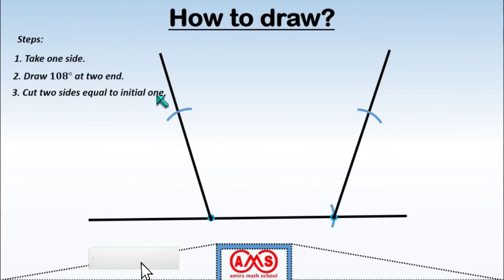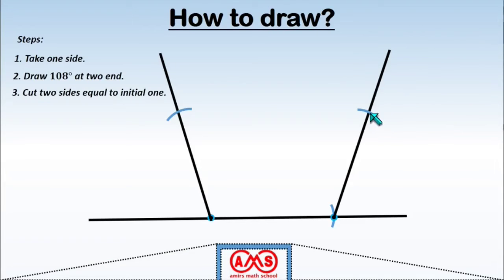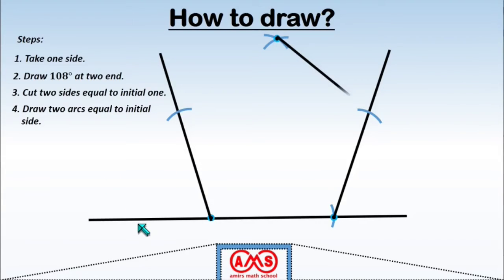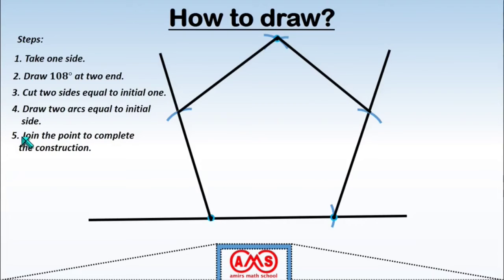We now have three sides. Step 4: Draw two arcs, taking each of the two new endpoints as centers and the side length as the radius. We get one intersecting point. Step 5: Join the intersecting point to the two endpoints to complete the construction. So we now have our regular pentagon.